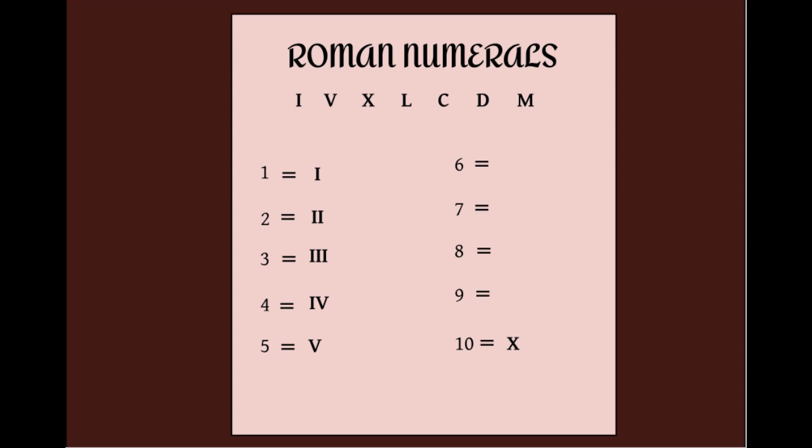For number six, we apply the second half of rule number three, which is writing the smaller symbol after the larger symbol to indicate addition. So, V for five plus I, six. For seven, add another I. For eight, add another I. For nine, again, we cannot repeat a symbol more than three times. So, as in four, we take the symbol for ten, and we add an I in front of it. So, it's IX.